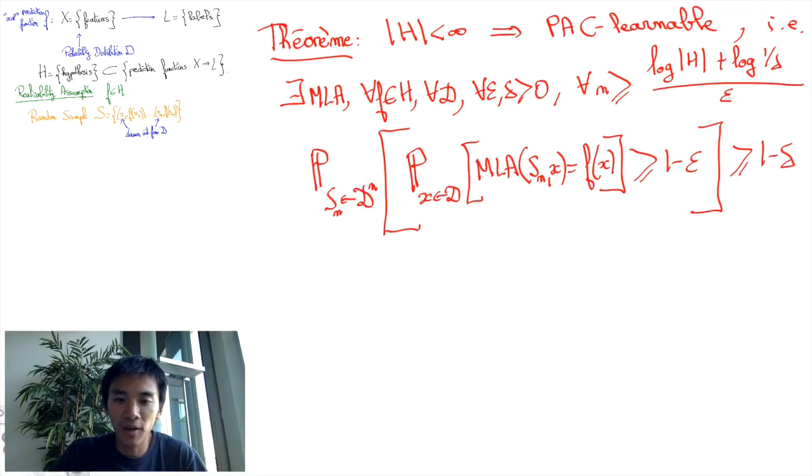since prediction functions are the outputs of our machine learning algorithm, they should be identifiable by a reasonable amount of bits. Well, log of the cardinal of H, the term that appears in the lower bound of the required sample size, is proportional to this number of bits, and would therefore be reasonably small as well. I hope that this convinces you of the relevance of the theorem in practice.